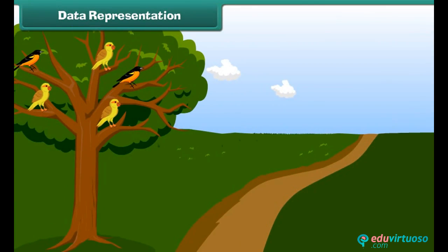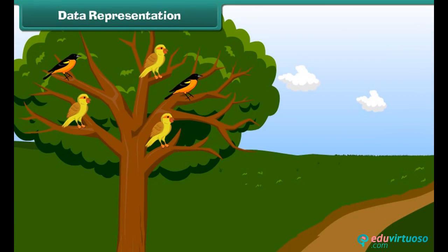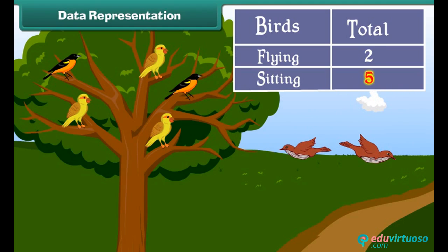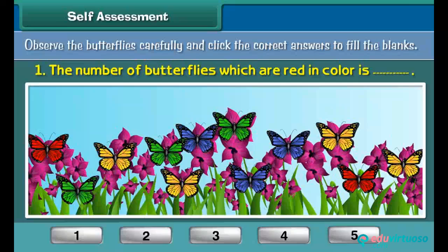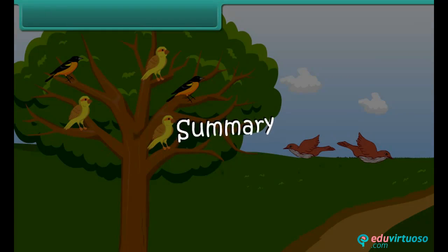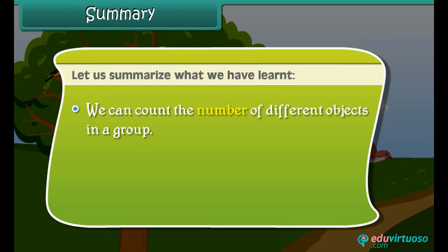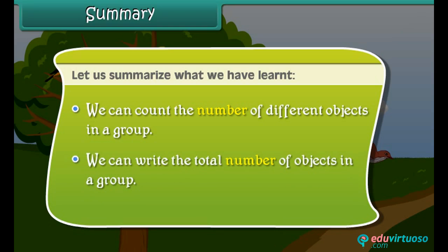It's such a pleasant morning. Look at the birds near the branch of the tree. We will now find the data of birds from this tree. There are 2 birds which are flying and 5 birds which are sitting on the tree. Let us summarize what we have learned: we can count the number of different objects in a group and write the total number of objects in a group. Thank you.